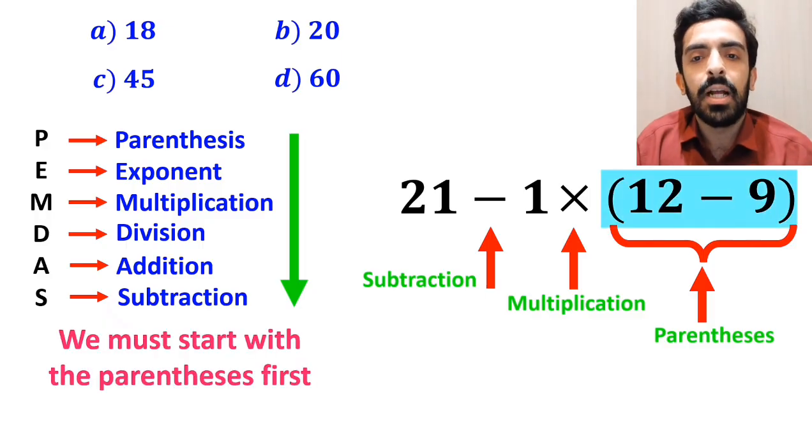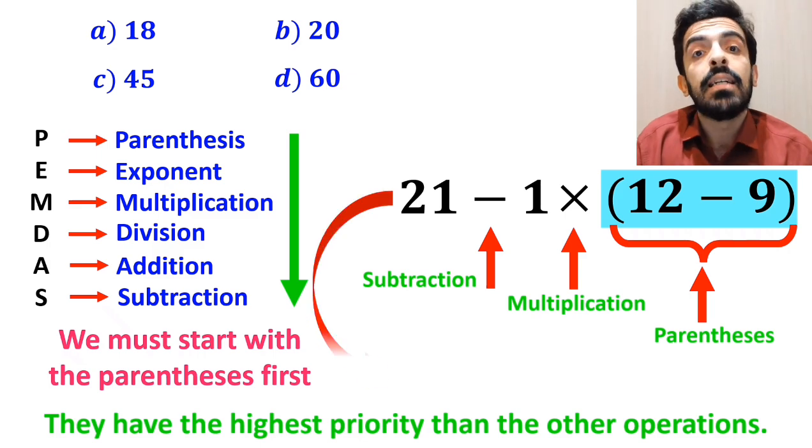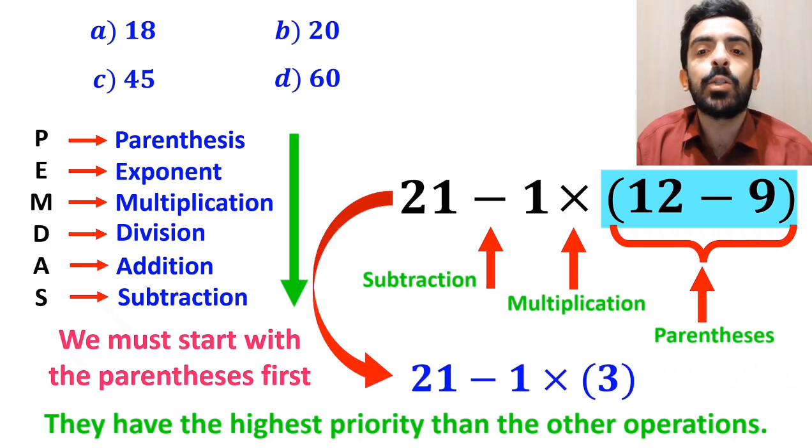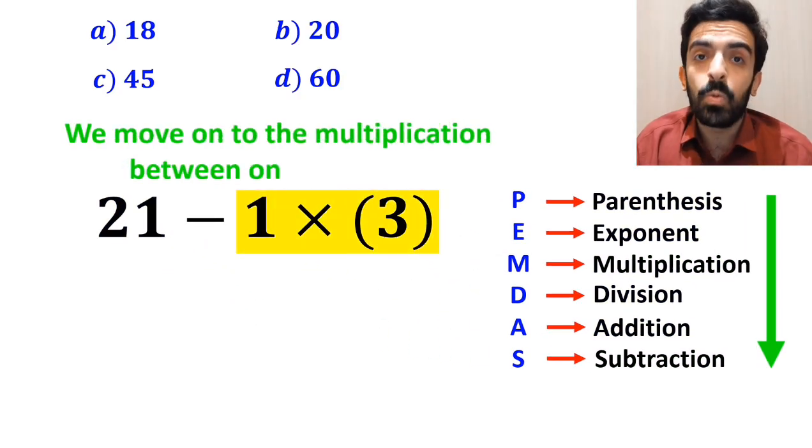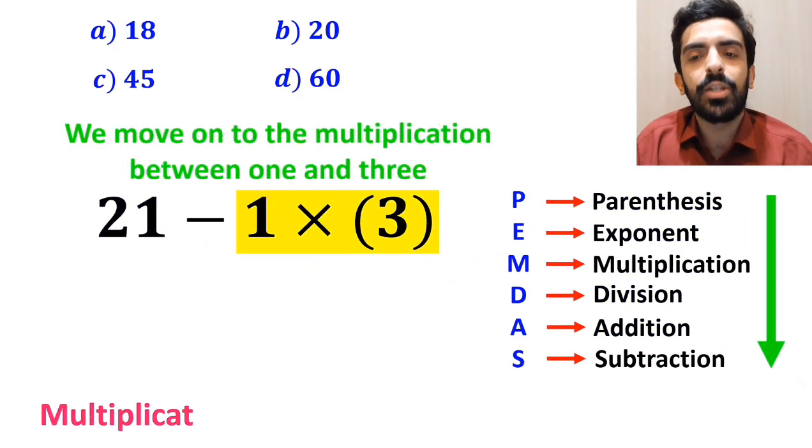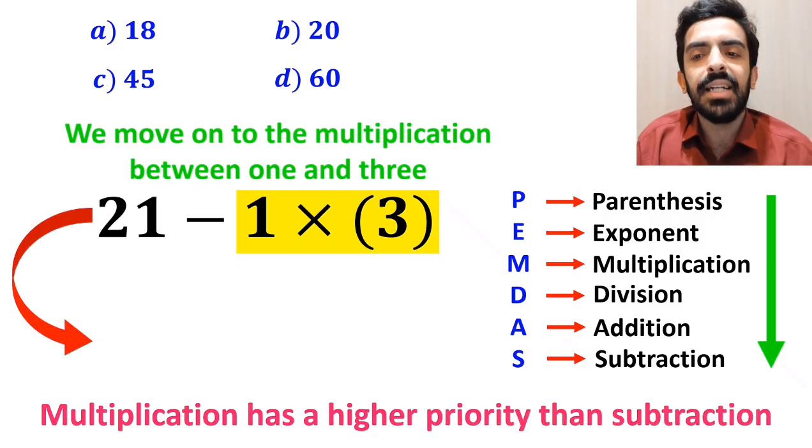We must start with the parenthesis first, because they have the highest priority than the other operations. So we can rewrite this expression as 21 minus 1 multiplied by 3. In the next step, we move on to the multiplication between 1 and 3, because multiplication has a higher priority than subtraction. So we rewrite this expression as 21 minus 3, which finally gives us the answer 18.